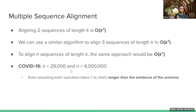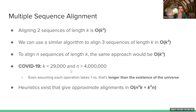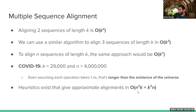Instead of the exact matrix-filling approach, there are heuristics — algorithms that aren't guaranteed to give you the exact best answer, but generally give pretty good approximate alignments. These heuristic algorithms scale as O(k·N² + N·k²) — an N-squared term that's much more reasonable. Four million squared times 29,000 is a lot more reasonable than 29,000 raised to the 4-millionth power.